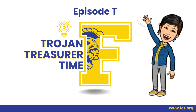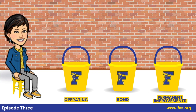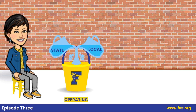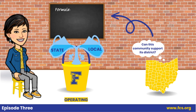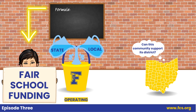Welcome to Trojan Treasure Time. In the last episode, we talked about how the operating bucket gets filled by both the state and local community. If your memory is really good, you'll even remember that the state uses a formula to determine how much funding a community is able to provide for its district, called the Fair School Funding Plan.